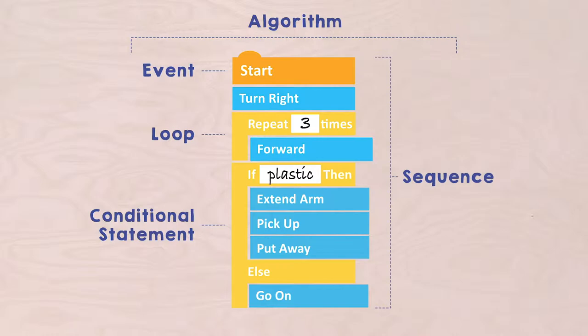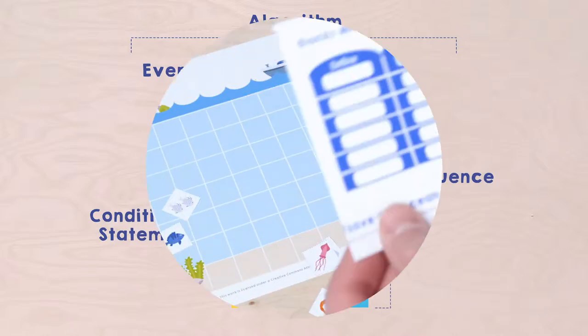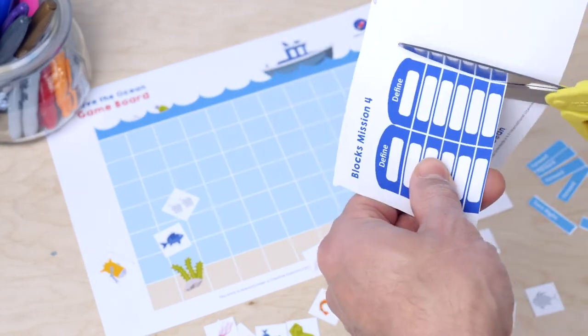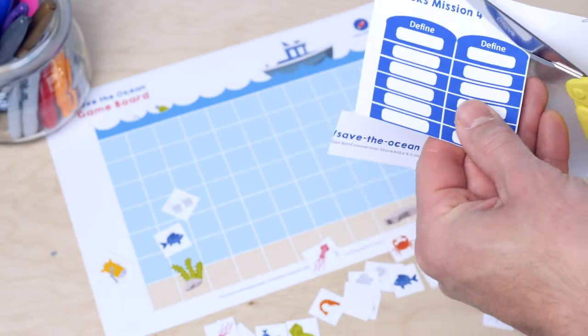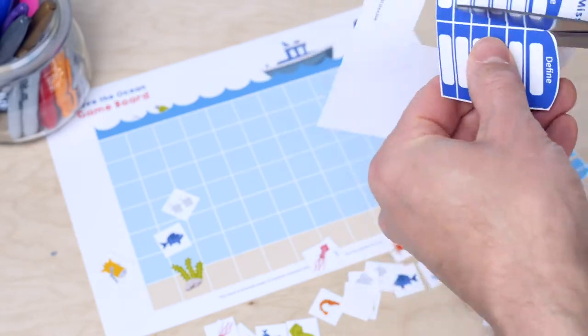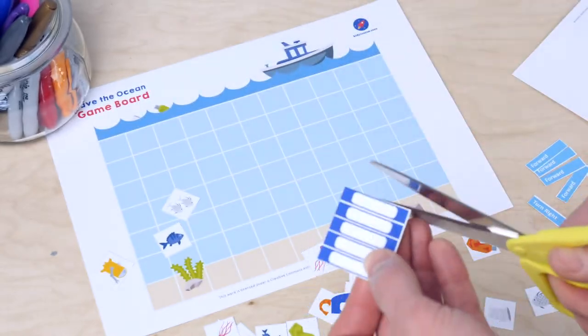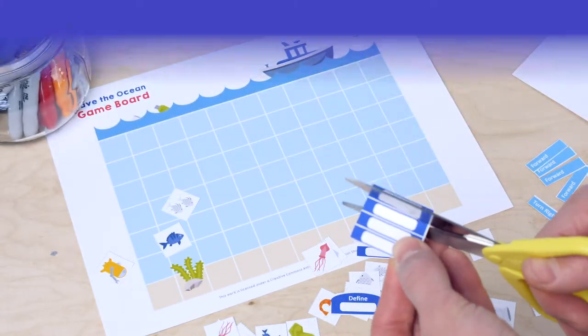We are almost done! Take your worksheet with the cards and the worksheet with the code blocks for Mission 4. Cut them out neatly, and pause this video while you do that.